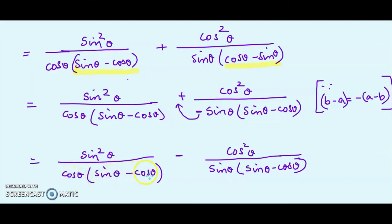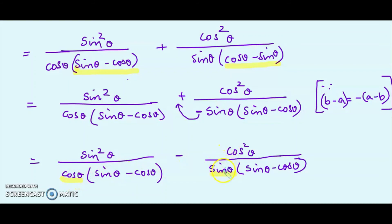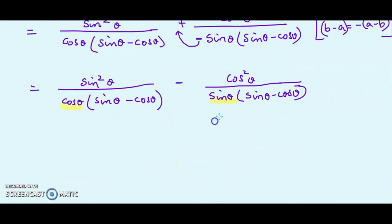Now one part of each denominator is the same: (sin θ − cos θ). The remaining factors are cos θ and sin θ respectively, so I make the denominator equal to cos θ · sin θ · (sin θ − cos θ). Multiplying cos θ across for the first term gives sin³θ, and multiplying sin θ across for the second term gives cos³θ. The combined numerator is sin³θ − cos³θ.